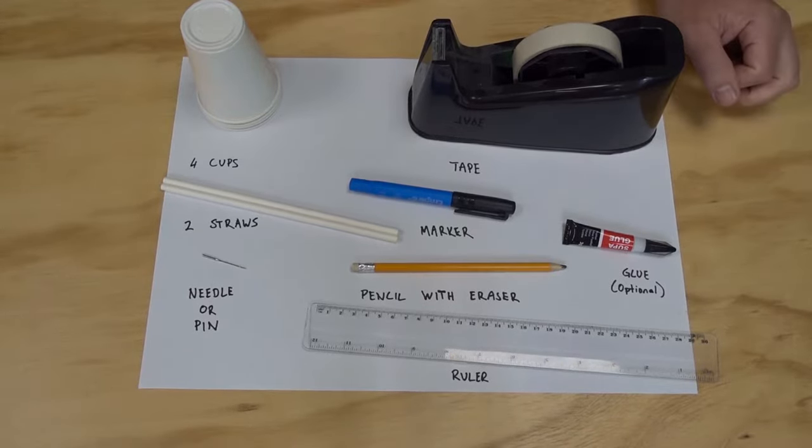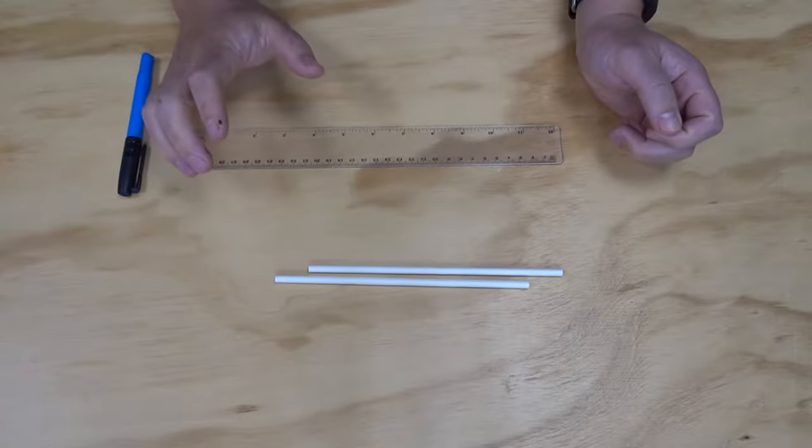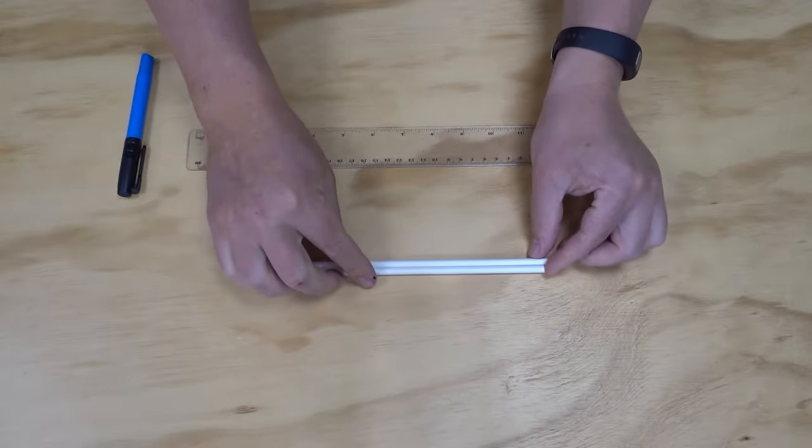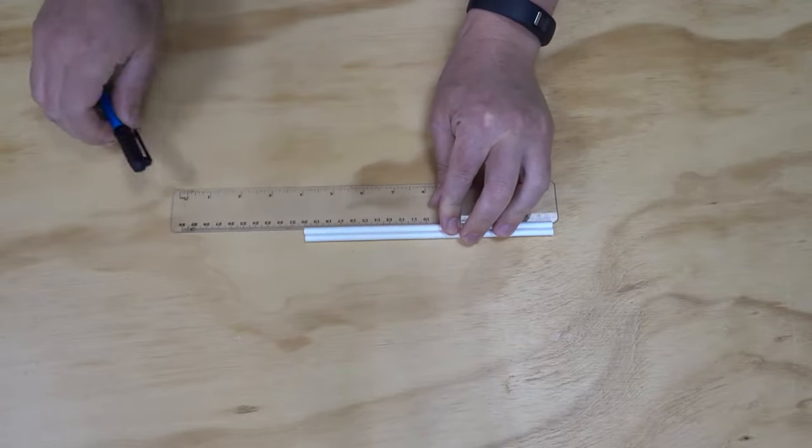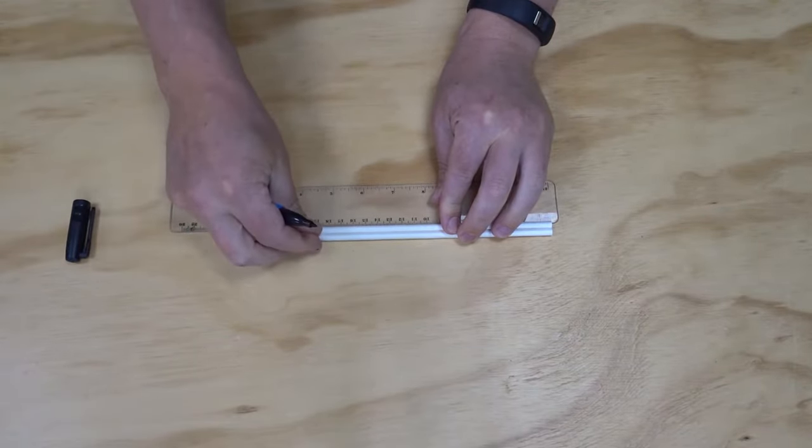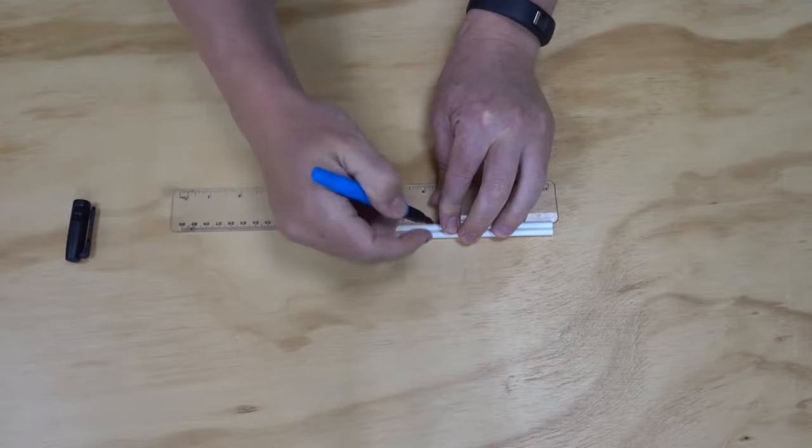To get started, the first thing we need to do is find the midpoint of our straws. So I'm simply going to use my ruler and my marker to mark where the middle of my straws is. Mine are just under 20 centimeters, so the midpoint is just below 10.